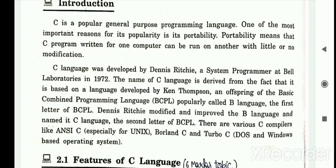Dennis Ritchie developed C in 1972, and this is an important point from the examination point of view. There are various C compilers like ANSI C, Borland C, and Turbo C. In our lab, we use Turbo C because we use a Windows-based operating system.